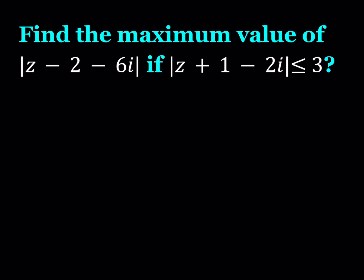First, let's talk a little bit about basics. What is a complex number? A complex number can be written as z equals x plus yi, where x and y are real numbers and i is the number that satisfies the relationship i squared equals negative 1.